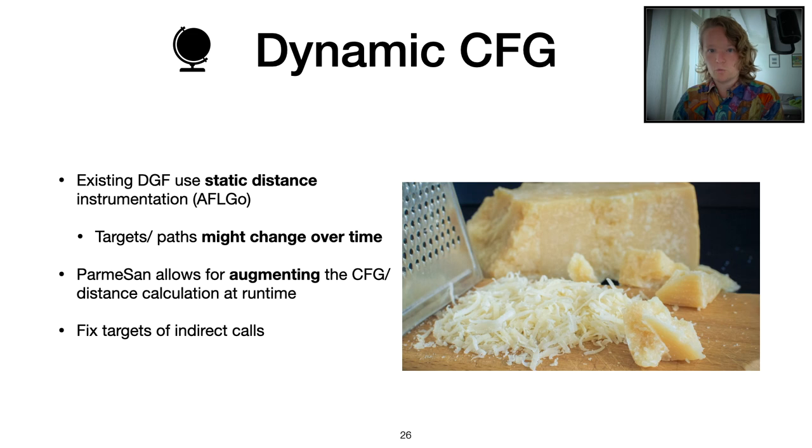And another thing that we can do with this dynamic control flow graph is to fix indirect calls. This is often an issue with static distance calculation. Having indirect calls is a huge hurdle.